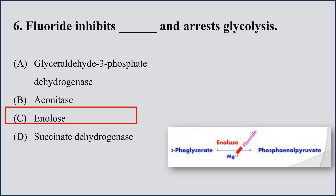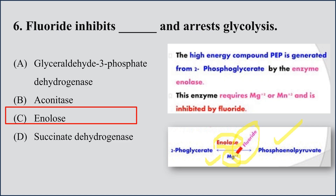The reaction catalyzed by enolase converts 2-phosphoglycerate into phosphoenolpyruvate. This enolase enzyme requires the presence of magnesium ion as a cofactor to proceed. Fluoride inhibits this magnesium ion cofactor activity, which inhibits this step and ultimately inhibits the glycolytic pathway. The high-energy compound phosphoenolpyruvate is generated from 2-phosphoglycerate by enolase, which requires magnesium or manganese ion and is inhibited by fluoride.